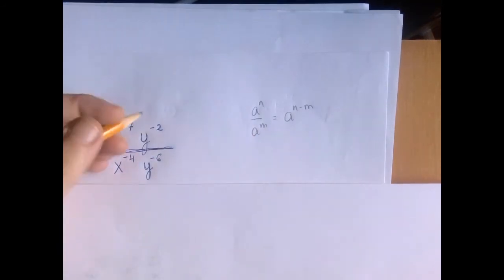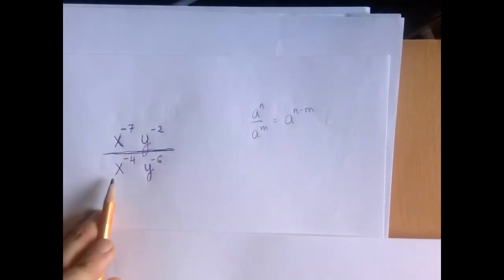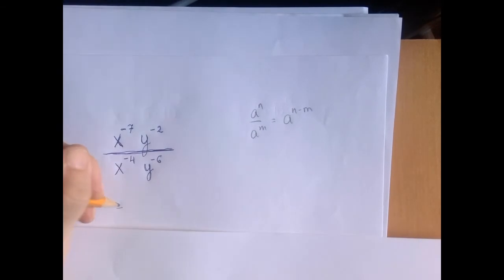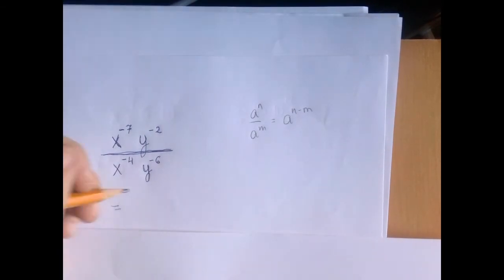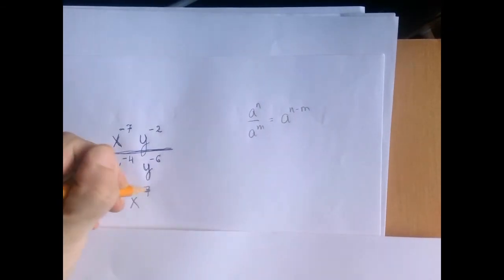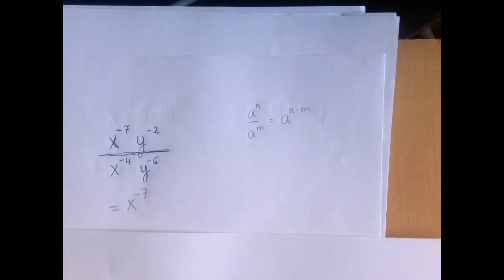So for example, x to the negative 7 divided by x to the negative 4 is the same as in the numerator x to the negative 7, not minus 4, but minus negative 4.